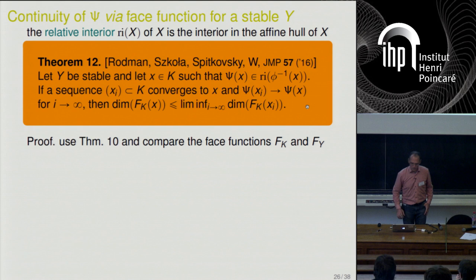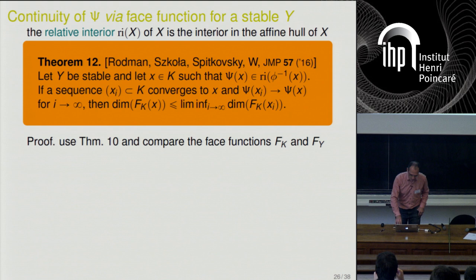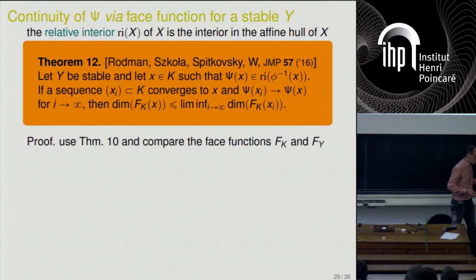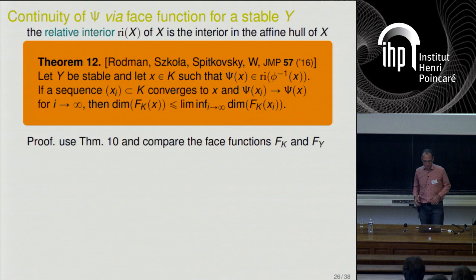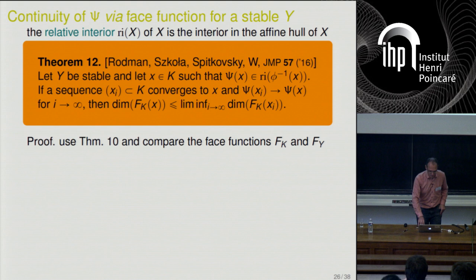Getting back to Papadopoulou's result about the phase function: there is a necessary condition of continuity, namely the phase function of the image that parametrizes the constraints — the numerical range — must be lower semi-continuous. Assuming Y is stable — so the state space is stable — and picking a point in the numerical range, we look at a sequence converging to that point and follow the inference values. They will converge only if the parametrizing set K has a lower semi-continuous phase function along that sequence.